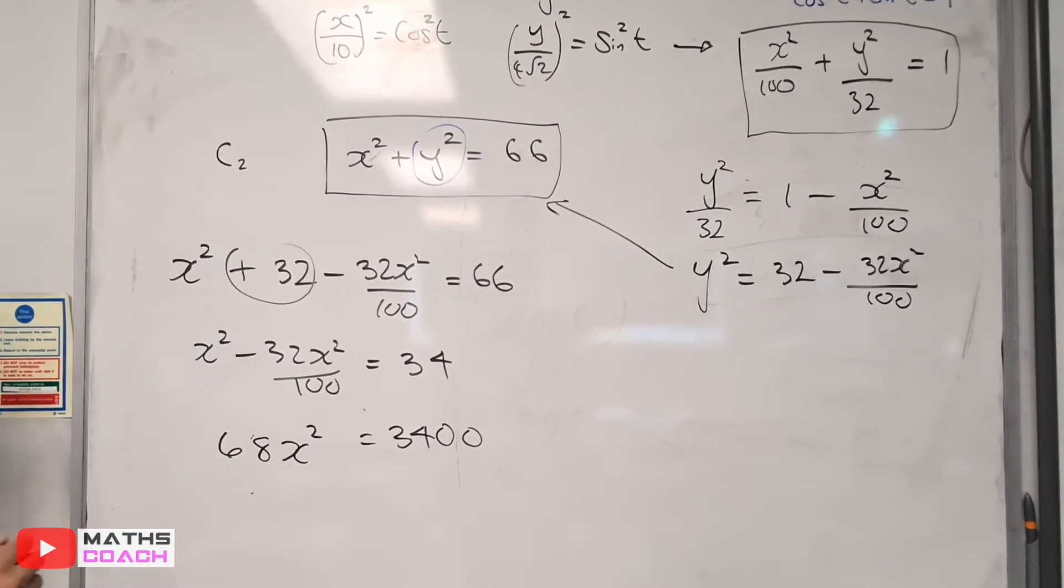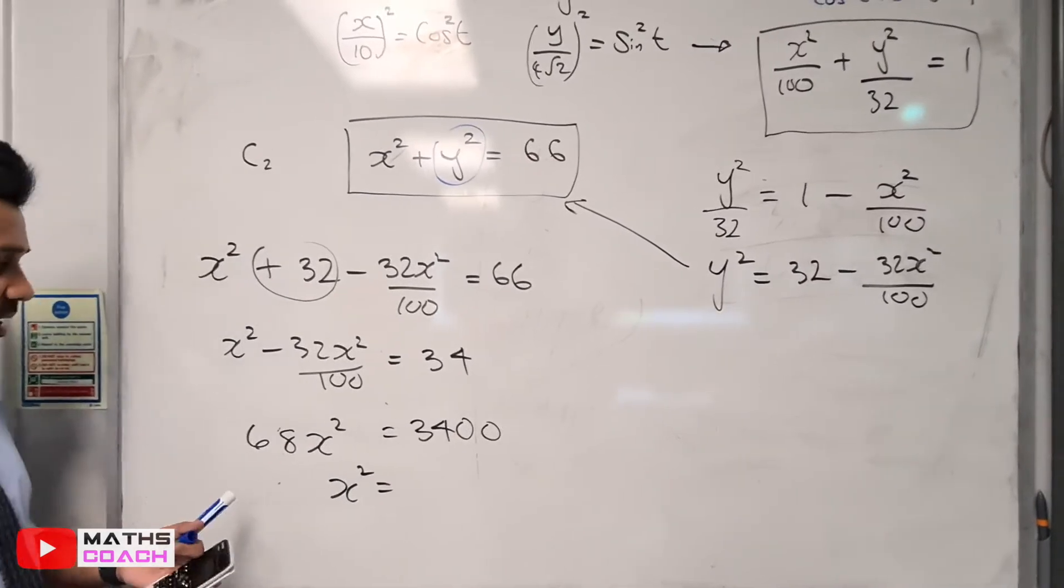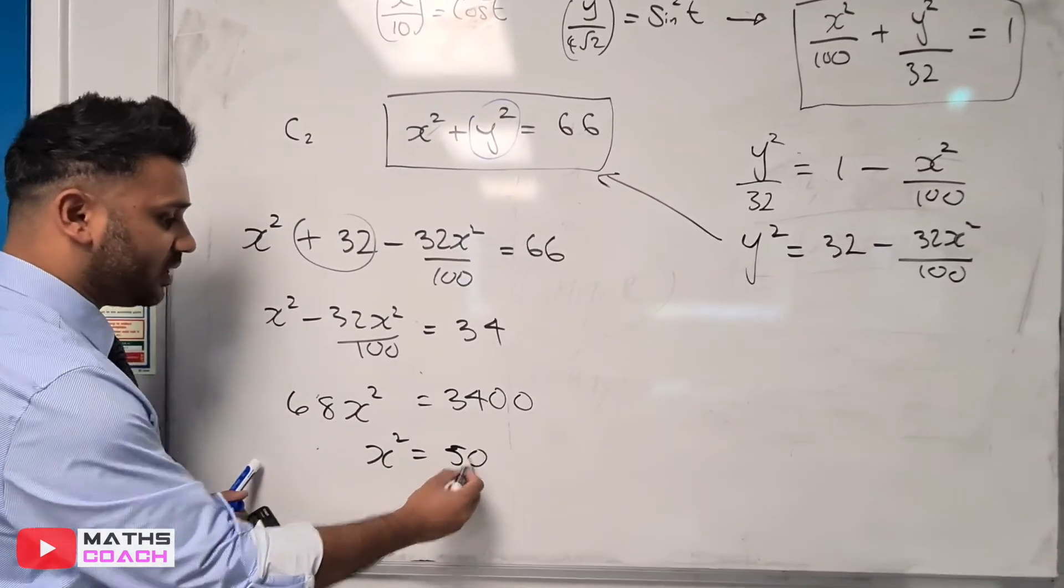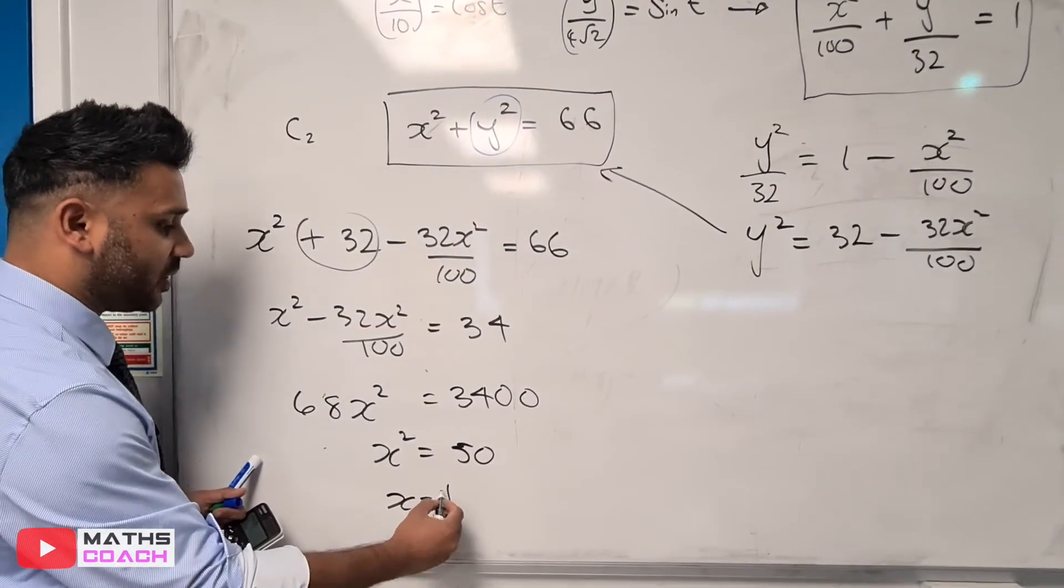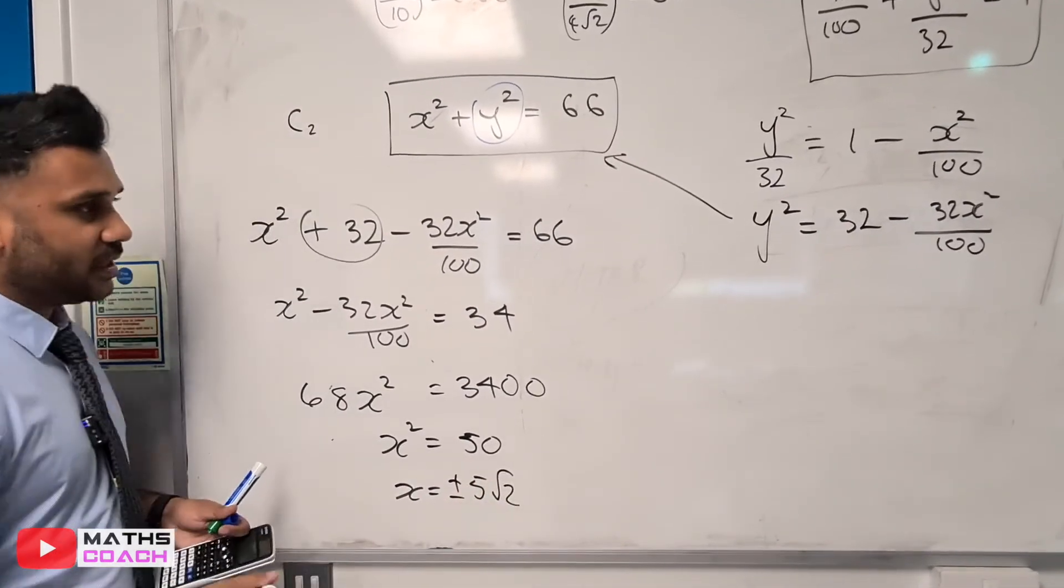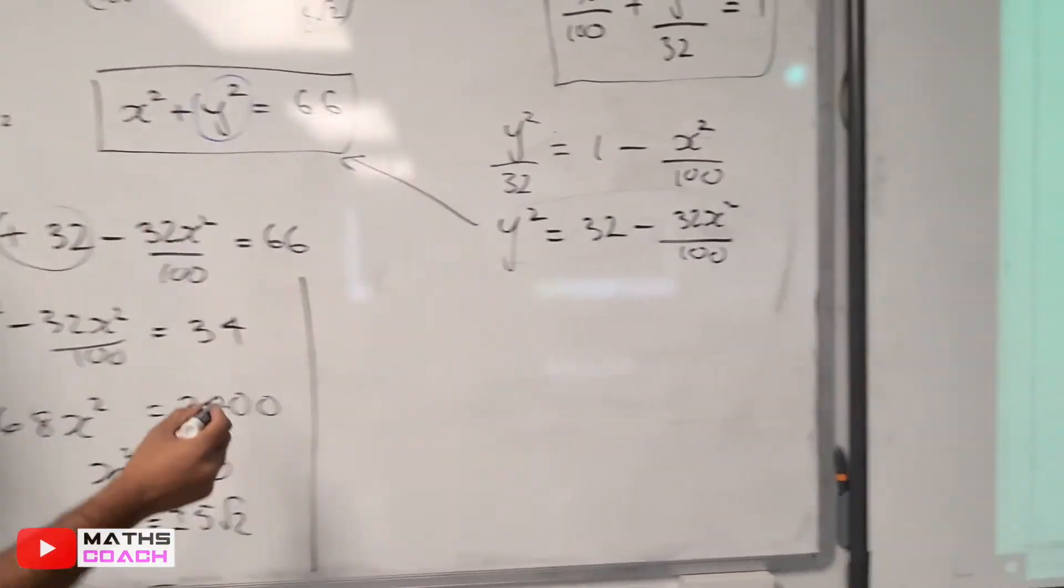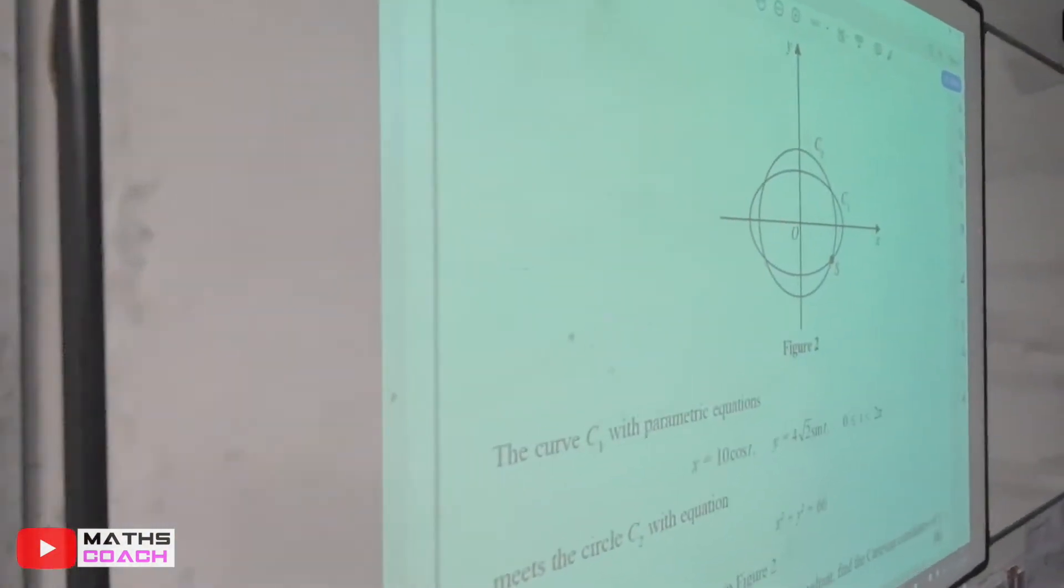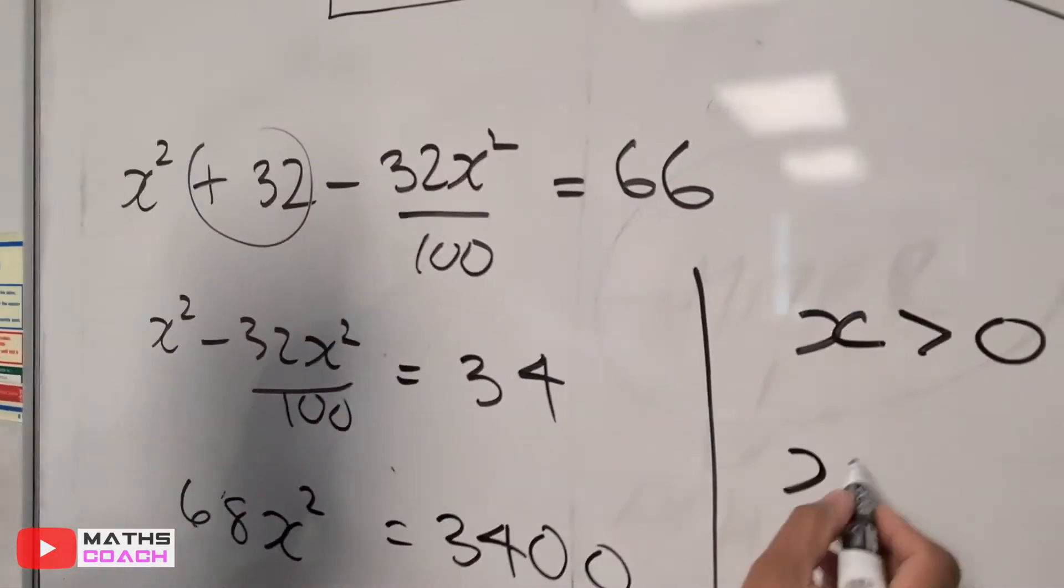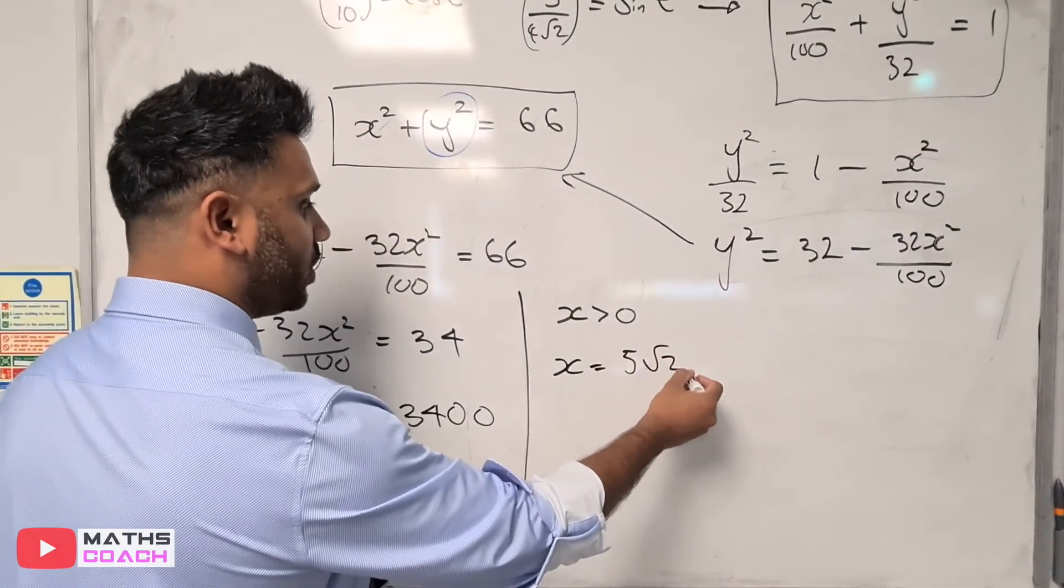Therefore x² = 50. Dividing 3400 by 68 gives you 50. x is therefore ±√50, which is ±5√2. Now we have the possible values for x. If you look at coordinate S, our x-coordinate has to be positive because it's in the fourth quadrant. So the x value we pick is positive 5√2.